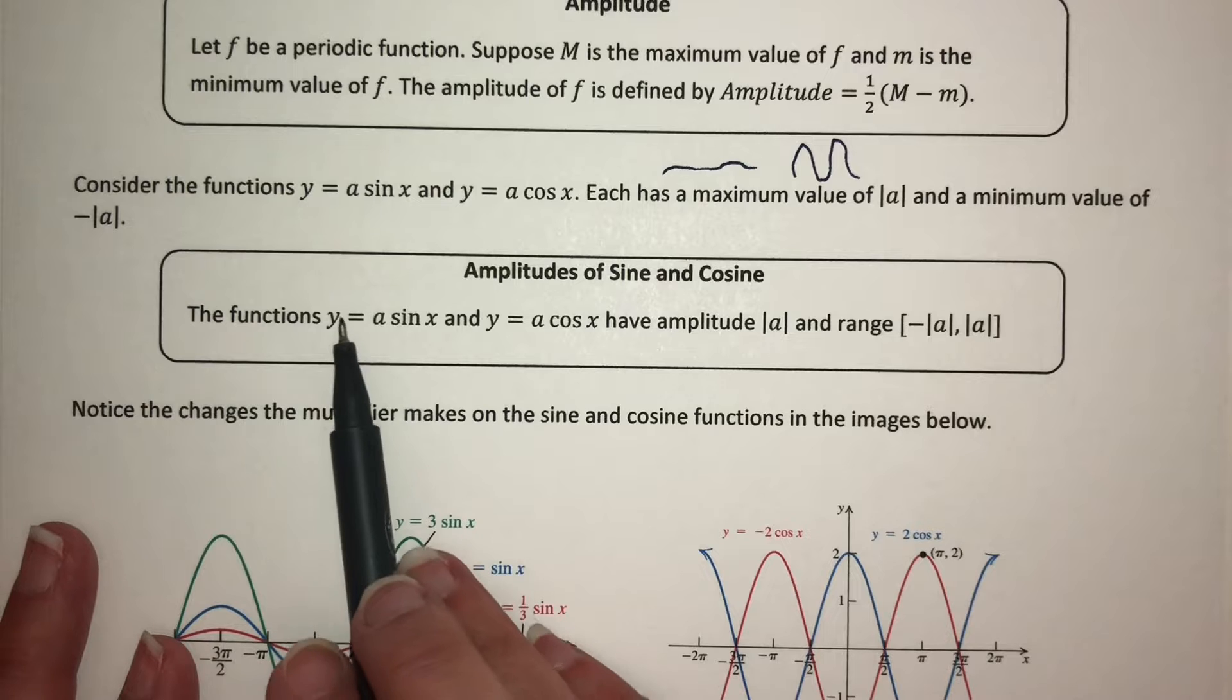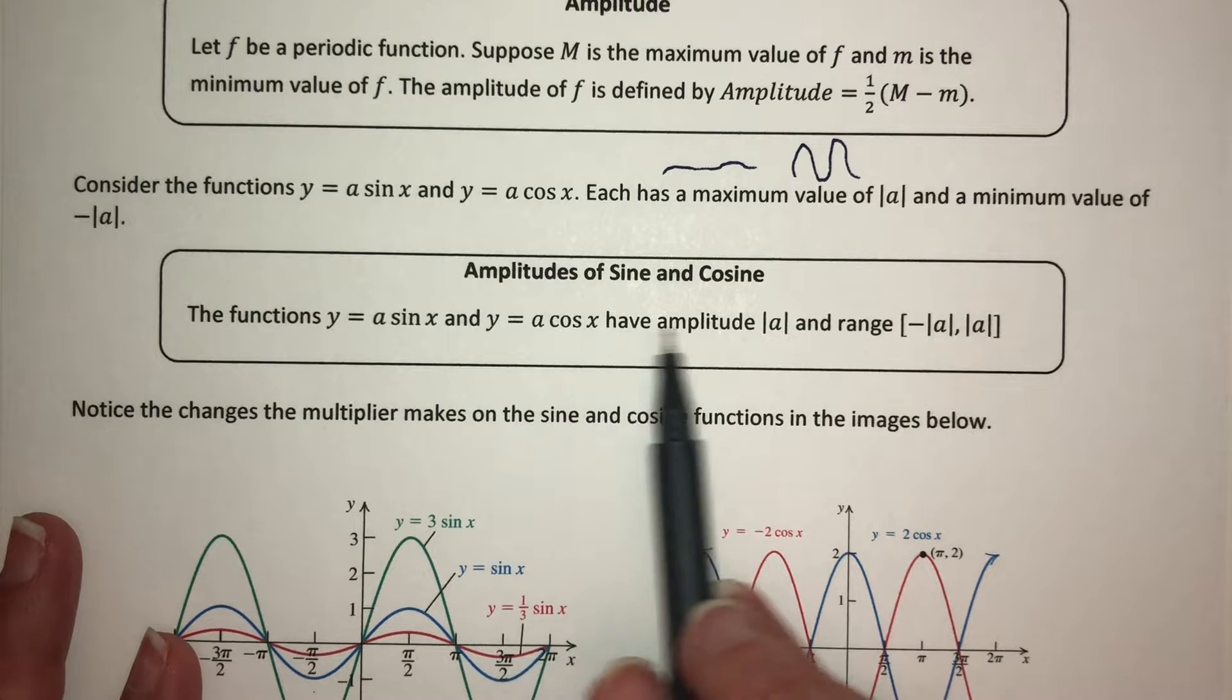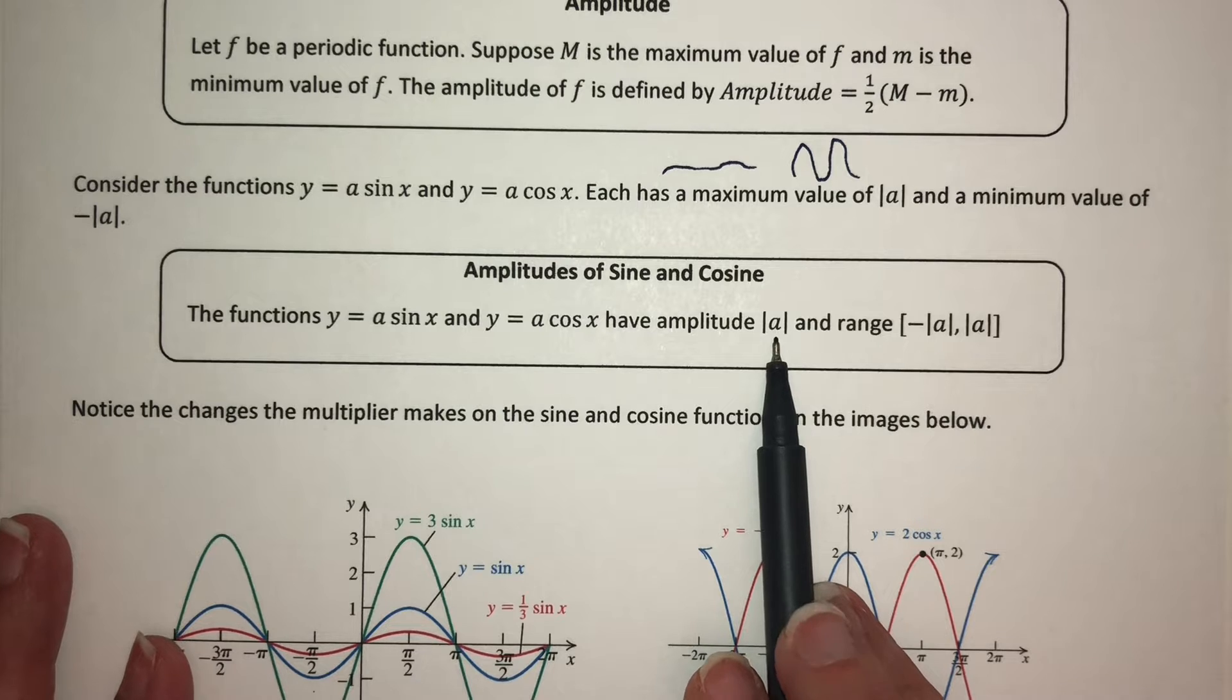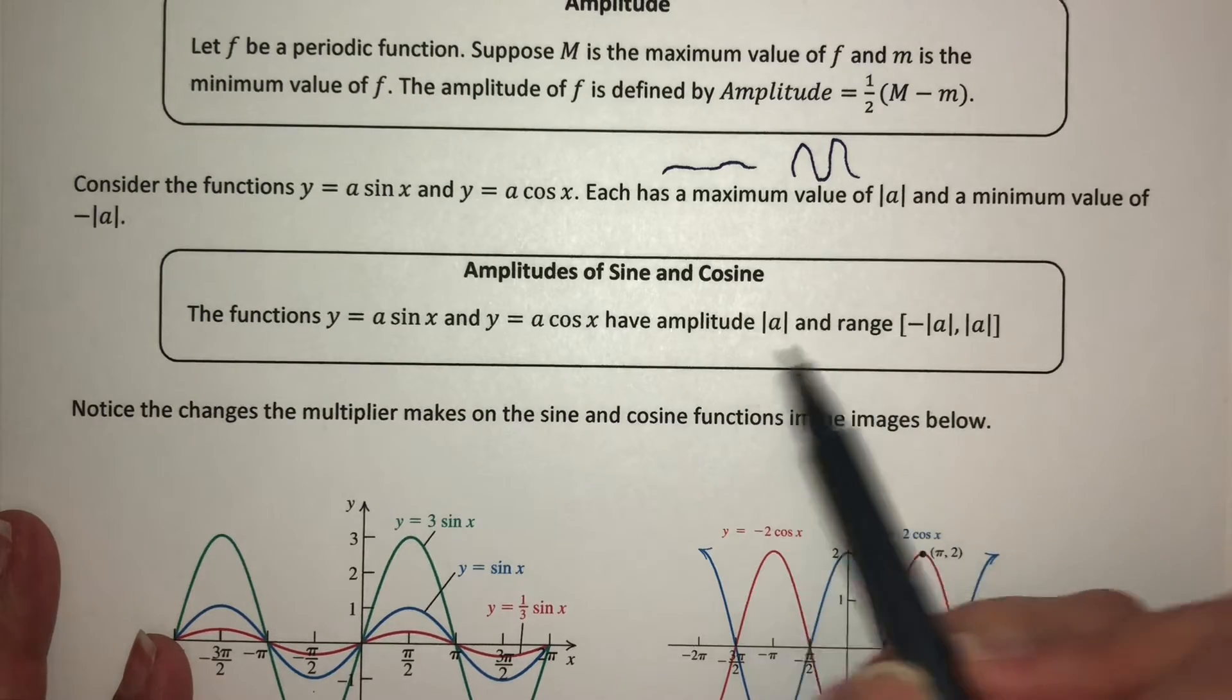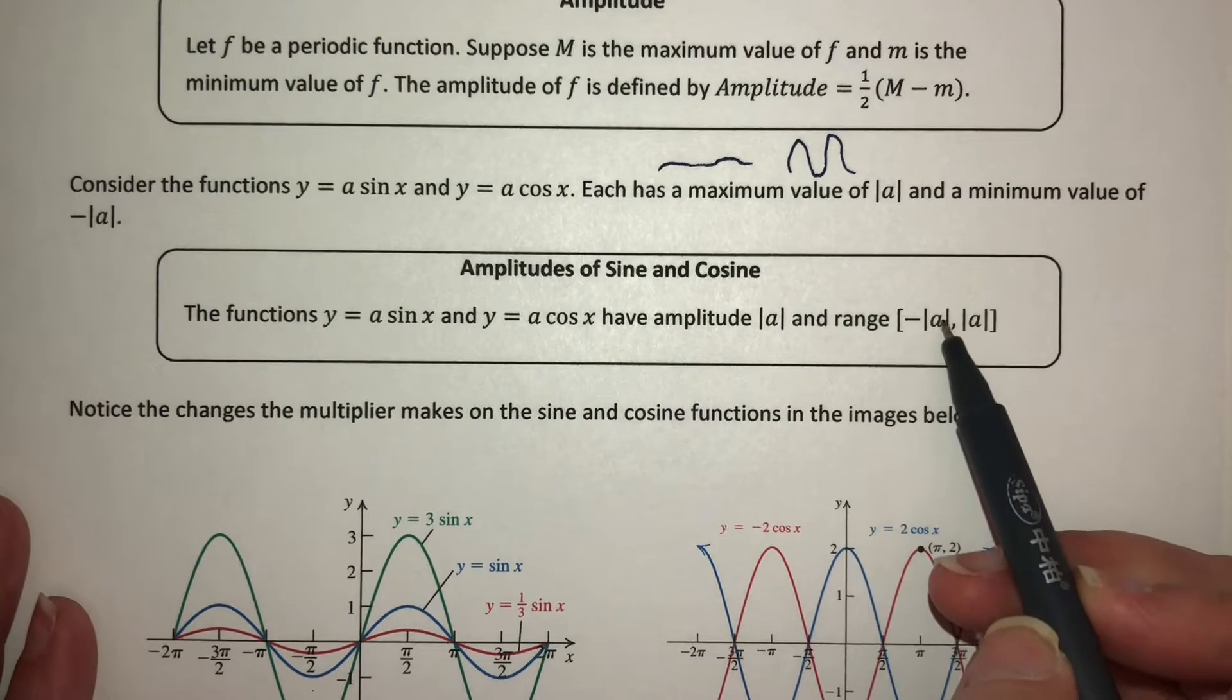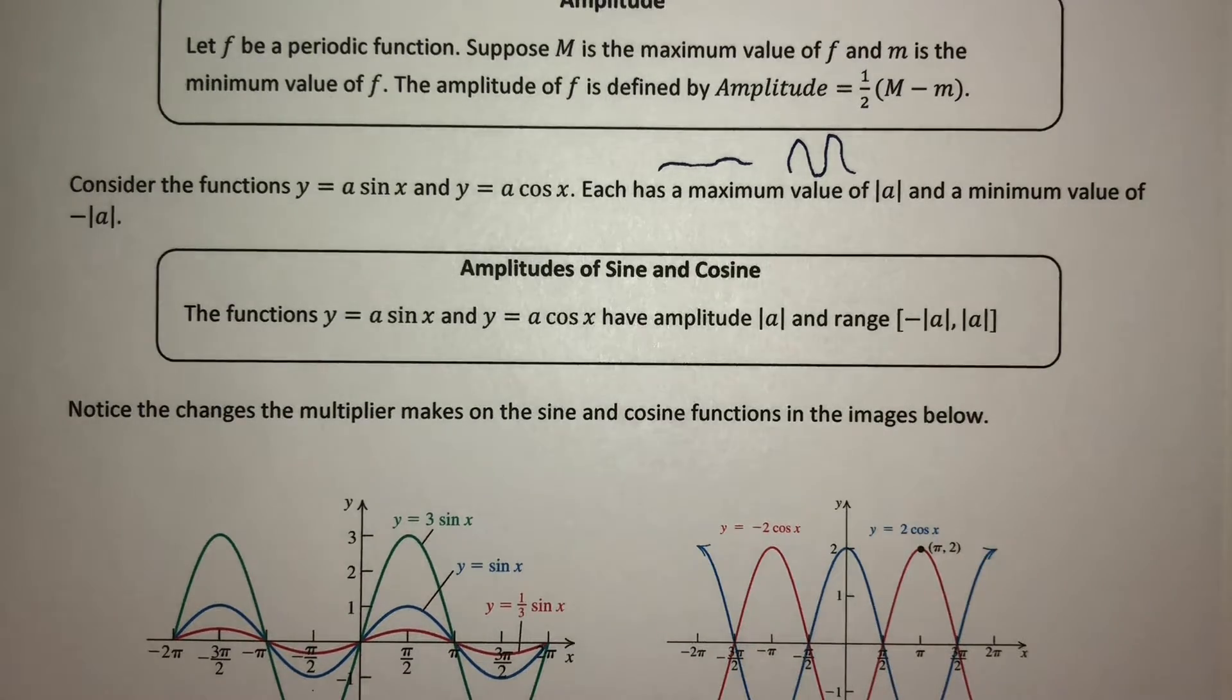So the functions y = a sin x and y = a cos x have amplitude of absolute value of a and range from negative absolute value of a to positive a. The absolute value thing here, just because we're allowed for that multiplier to be a negative number, and we know that multiplying by a negative in front of a function means we reflect it over the x-axis. Amplitude is always a positive number.